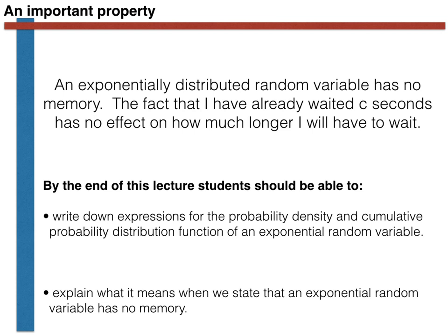This concludes our brief survey of the exponential random variable. As stated at the start, you should now be able to write the expression for the cumulative probability distribution function for this type of random variable. In addition, you should be able to derive an expression for the probability density function from this expression, and explain what it means when we state that this type of random variable has no memory. If you are unable to do any of these things, have another view of this video. Thank you for your attention.